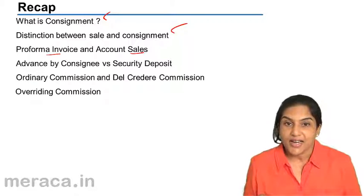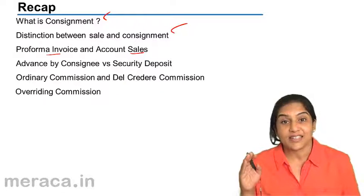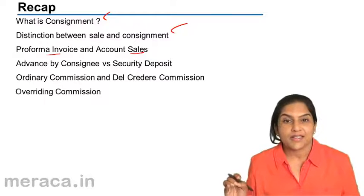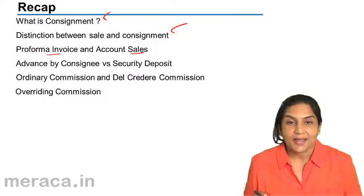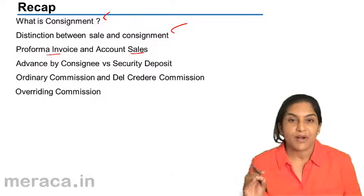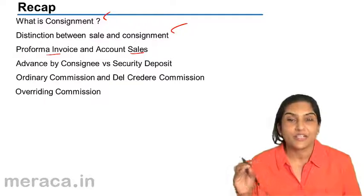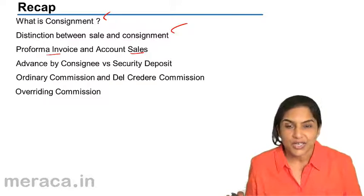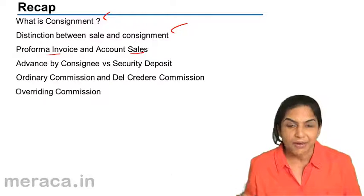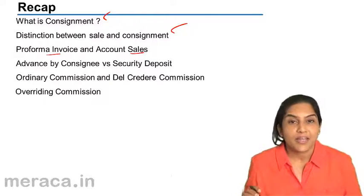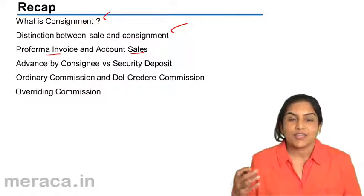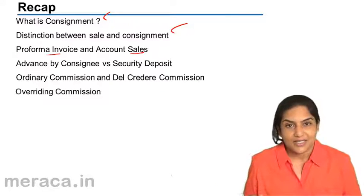Account sales, on the other hand, is sent by the consignee to the consignor. It is a statement detailing the quantity and rate of sales, the quantity of goods sold, the price at which they were sold, the balance of inventory, the commission due to the consignee, any expenses incurred by the consignee on the consignment that need to be reimbursed by the consignor, and therefore the balance due from the consignee to the consignor.